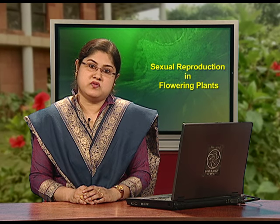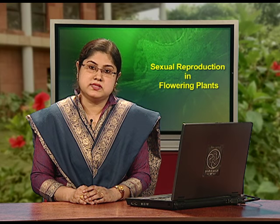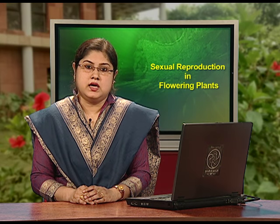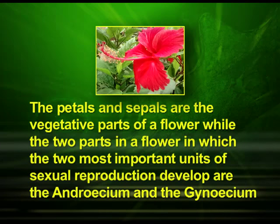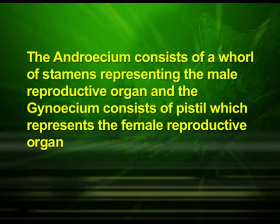Biologically, flowers are morphological and embryological marvels and the sites of sexual reproduction. The petals and sepals are the vegetative parts of a flower, while the two most important units of sexual reproduction are the androecium and the gynoecium. The androecium consists of a whorl of stamens constituting the male reproductive organ, and the gynoecium consists of the pistil which represents the female reproductive organ.